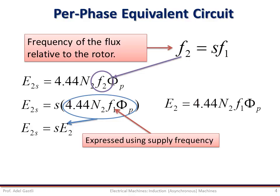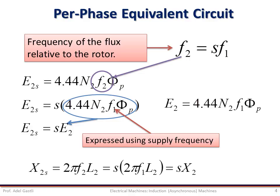This transformation allows us to connect the rotor and stator circuits electrically, with all variables having the same frequency — the supply frequency or stator frequency. Similarly, the rotor winding reactance X2S, expressed as a function of the rotor circuit frequency F2, can be written as a function of the slip and the stator supply frequency F1, with a new variable called X2 instead of X2S. So X2 will be a function of the stator frequency.